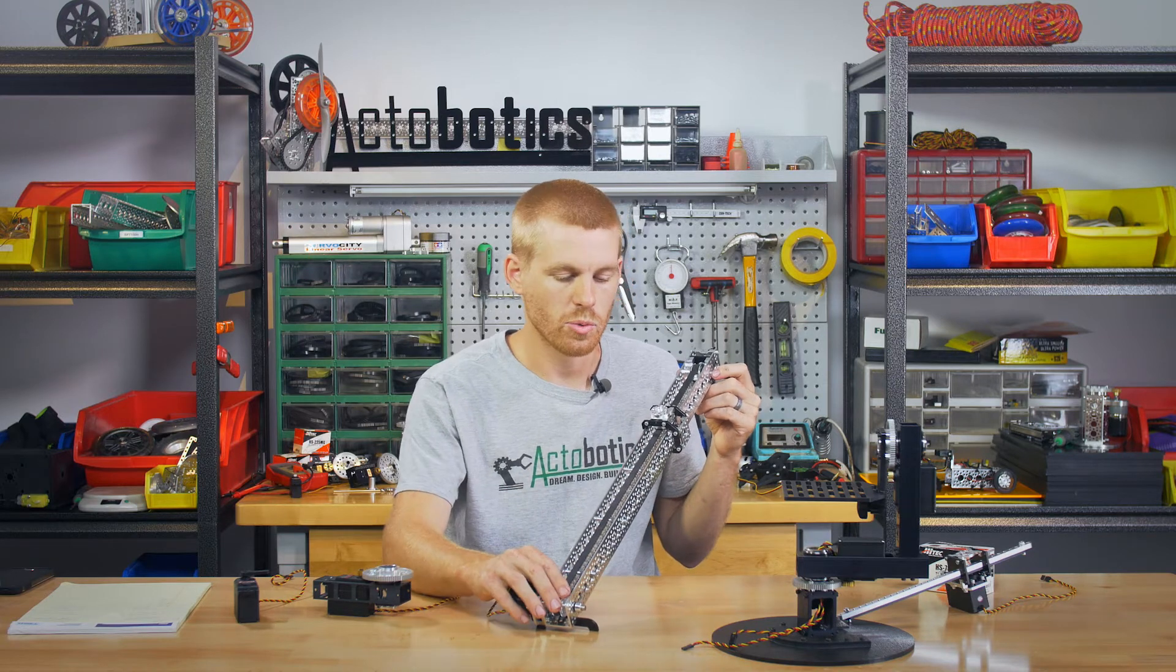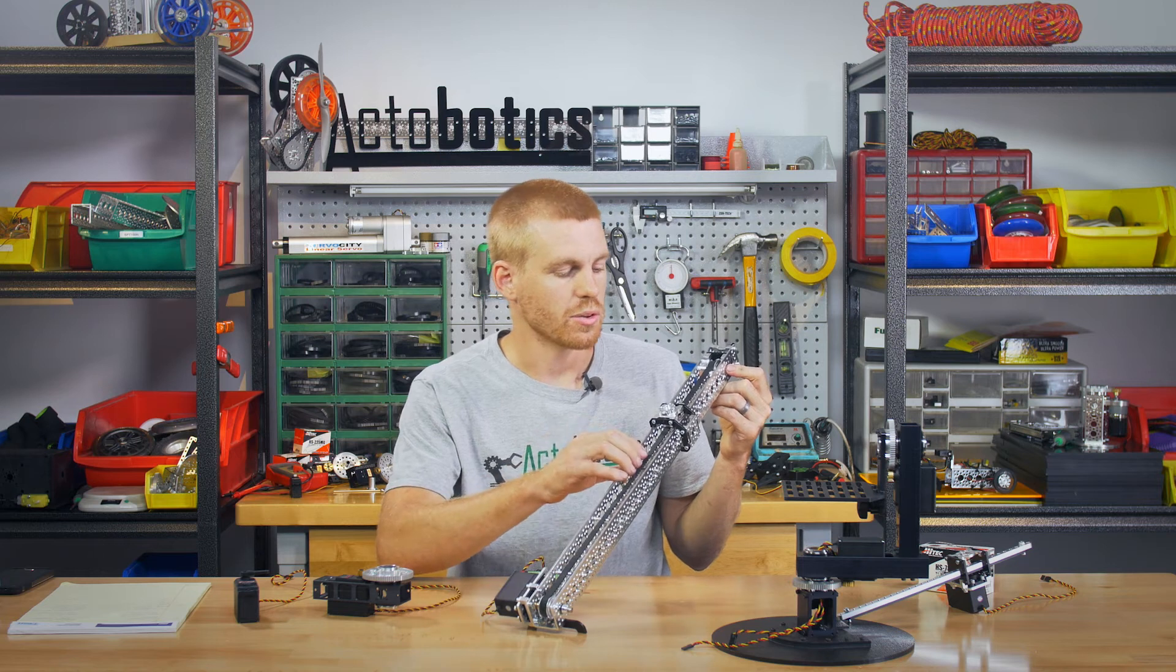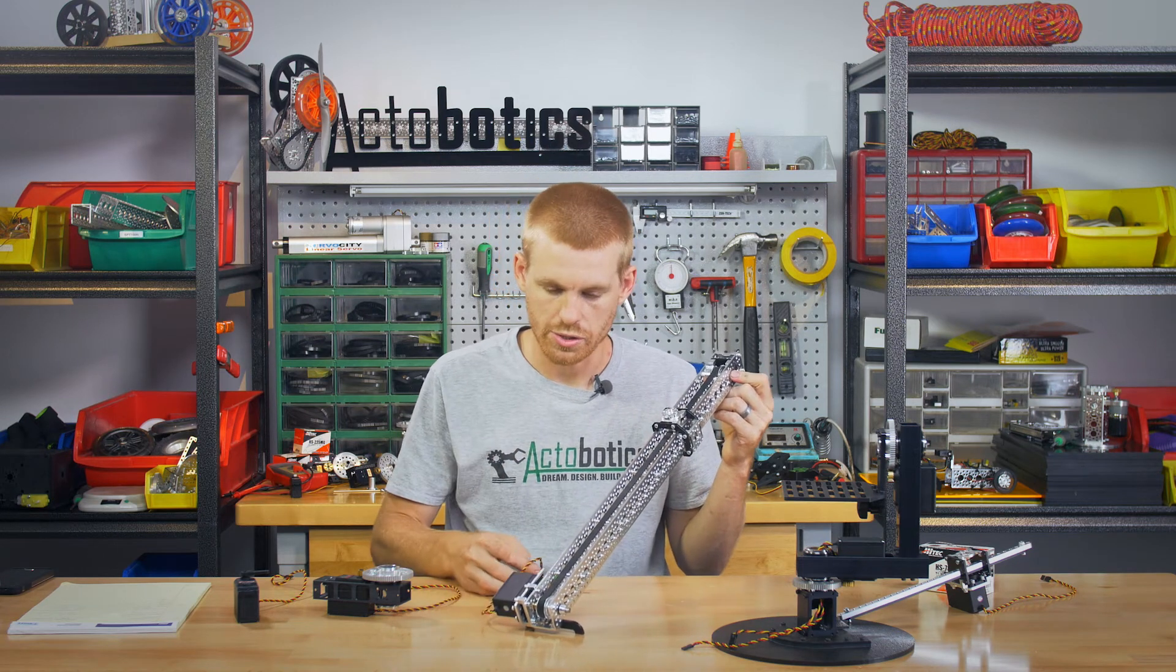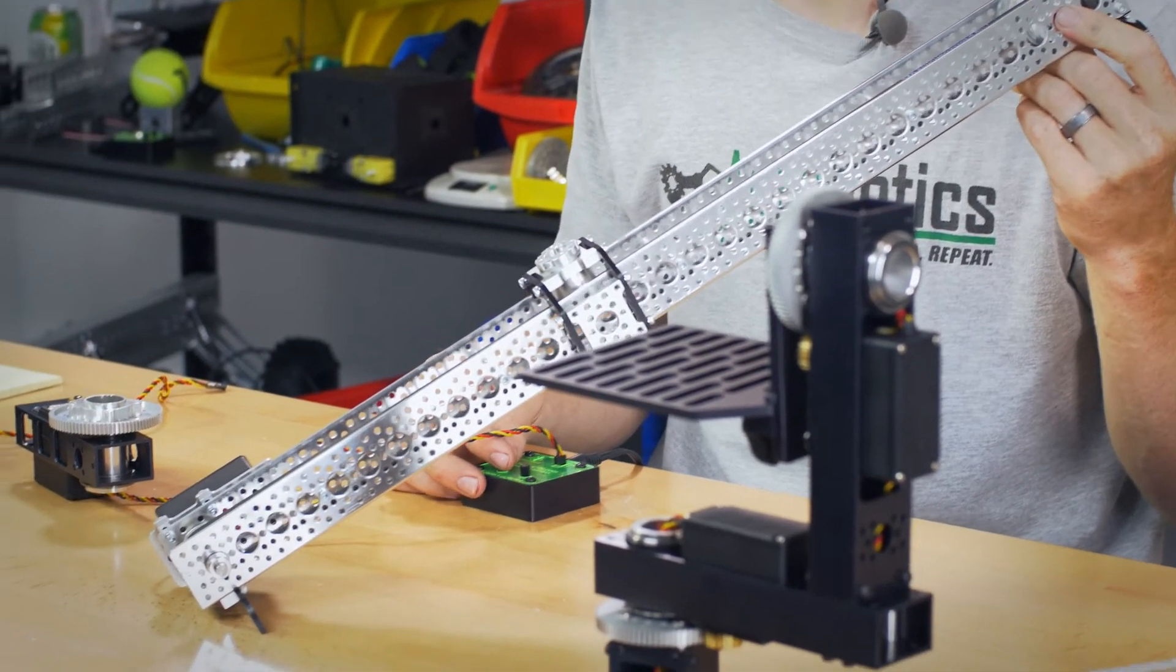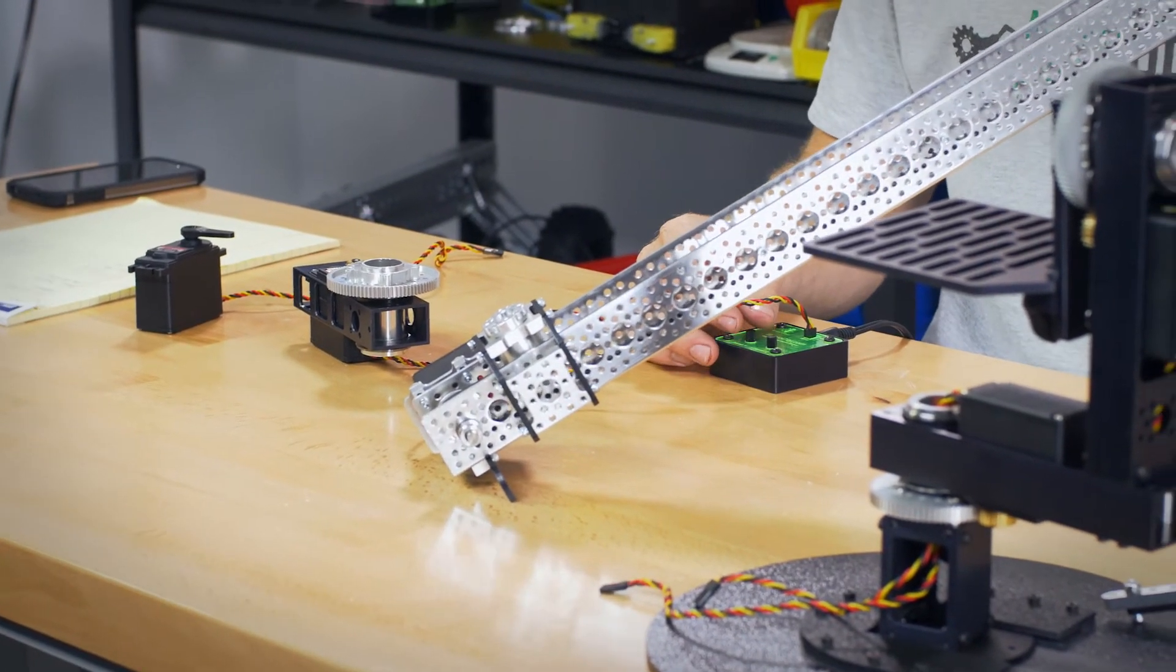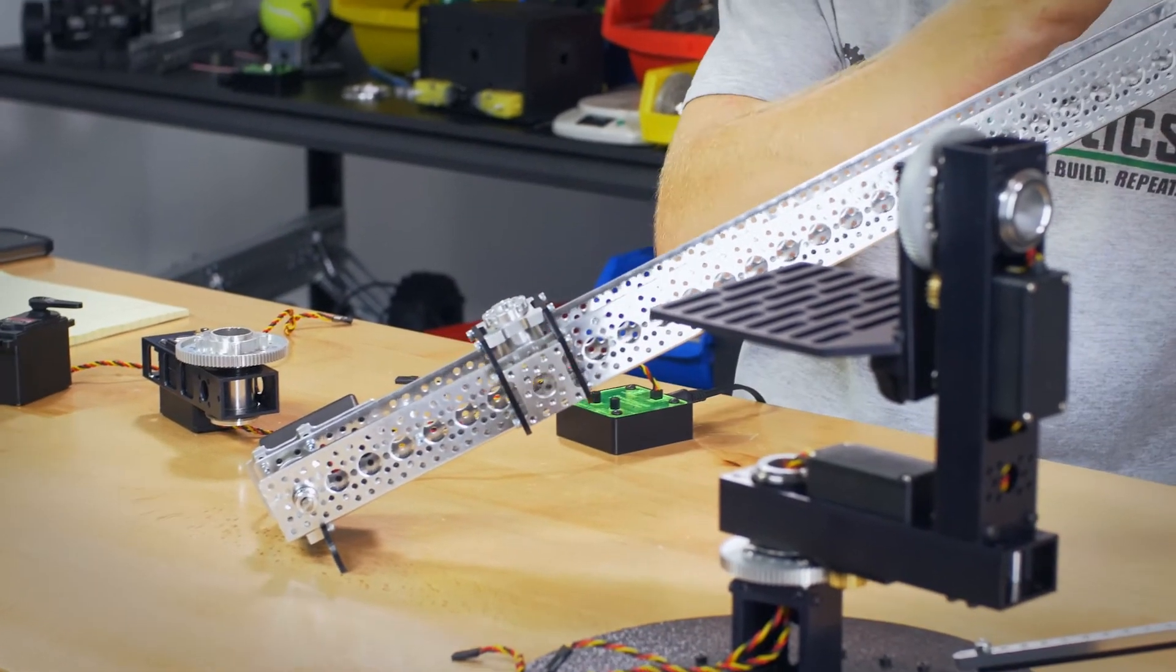And we're running a 15 tooth pulley on this. So every rotation of the pulley moves the belt about three inches, which is going to move your acetyl slider three inches as well. Running on the dual servo driver, looks like we're getting about 12.75 inches of movement. If you want to go the full travel, just send a wider signal to it and you could go all the way down to the end.